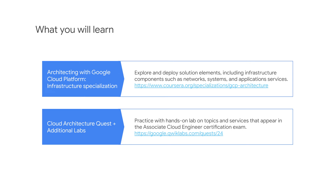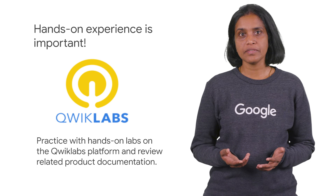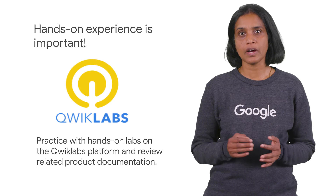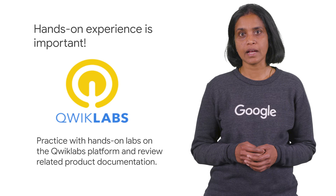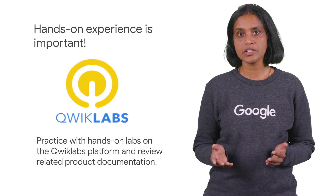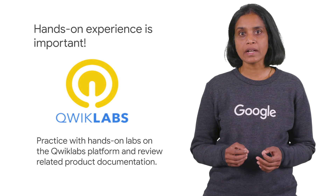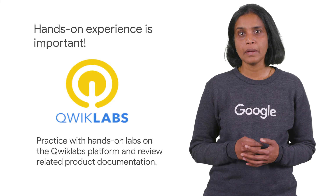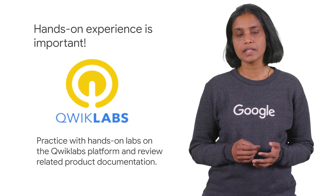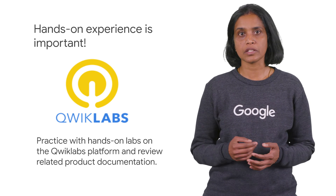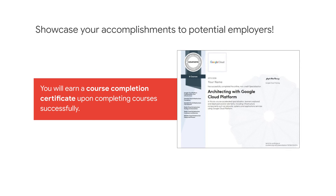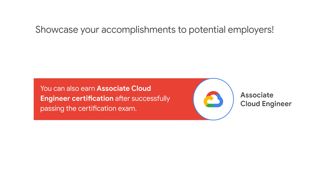It's highly recommended that you complete additional labs as well. The training you receive in the Associate Cloud Engineer track provides a solid foundation for preparing to take the certification exam. However, the training does not teach exactly what you will need to pass the test. Practical hands-on experience is also needed. Make sure to practice with the suggested labs in QuickLabs and to review product documentation. You earn a course completion certificate from Google Cloud upon completing the Coursera specialization successfully. Success in the Associate Cloud Engineer certification exam enables you to demonstrate to potential employers that you have the skills necessary to succeed in roles that require proficiency in cloud technologies.